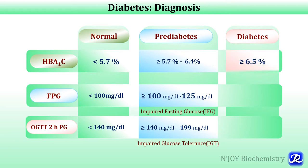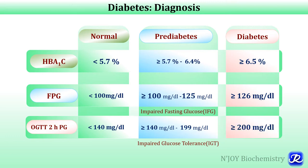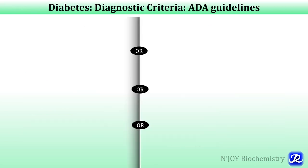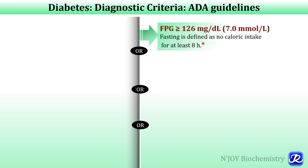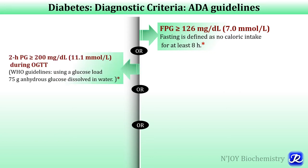In diabetes, HbA1c is more than or equal to 6.5 percent, fasting plasma glucose is more than or equal to 126 milligram per deciliter, and two-hour post-load glucose on oral glucose tolerance test is more than or equal to 200 milligram per deciliter. As per American Diabetes Association guidelines, fasting is defined as no calorie intake for at least eight hours, and the oral glucose tolerance test should be performed using a glucose load of 75 gram anhydrous glucose dissolved in water.